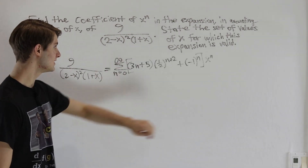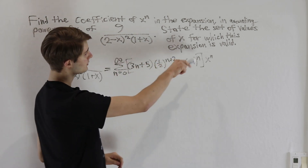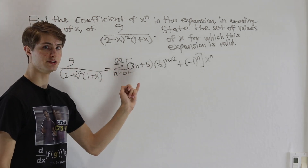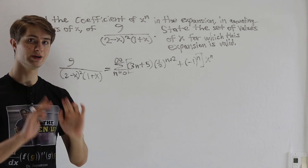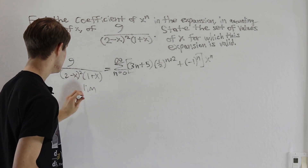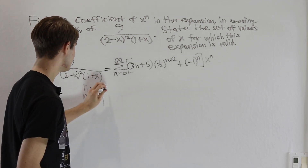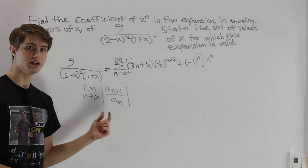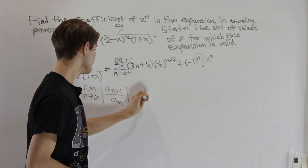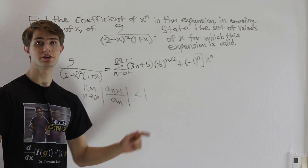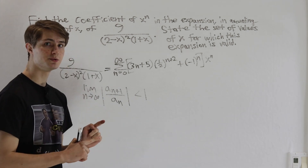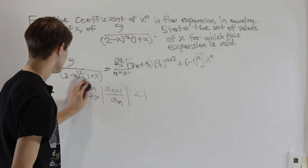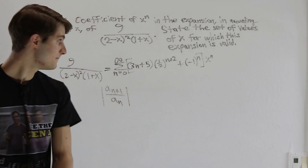Now for the second part of the question: finding the set of values of x for which this expansion is valid, i.e., the interval of convergence. We use the ratio test, which says: take the limit as n approaches infinity of the absolute value of the (n plus 1)th term divided by the nth term. If this limit is less than 1, the series converges; if greater than 1, it diverges; if equal to 1, we need further investigation.